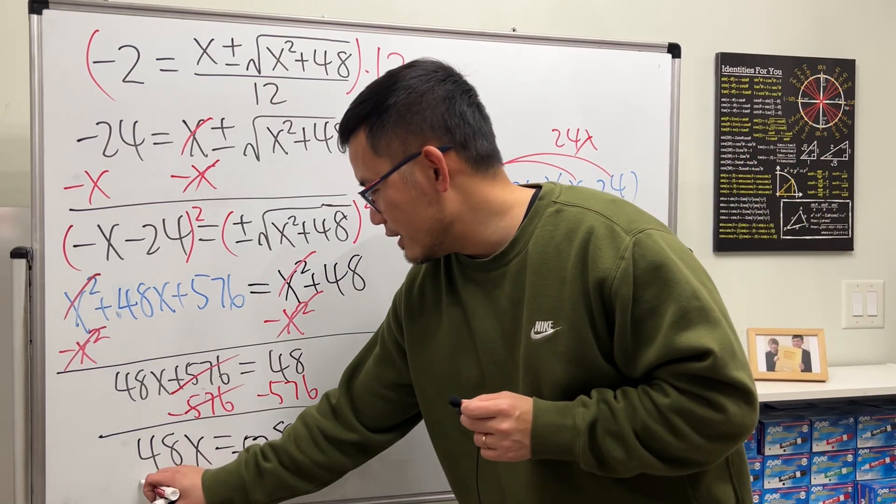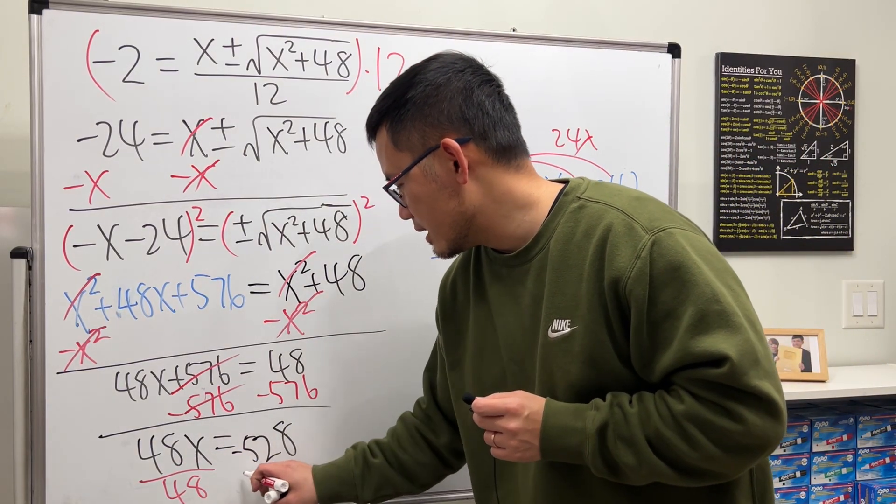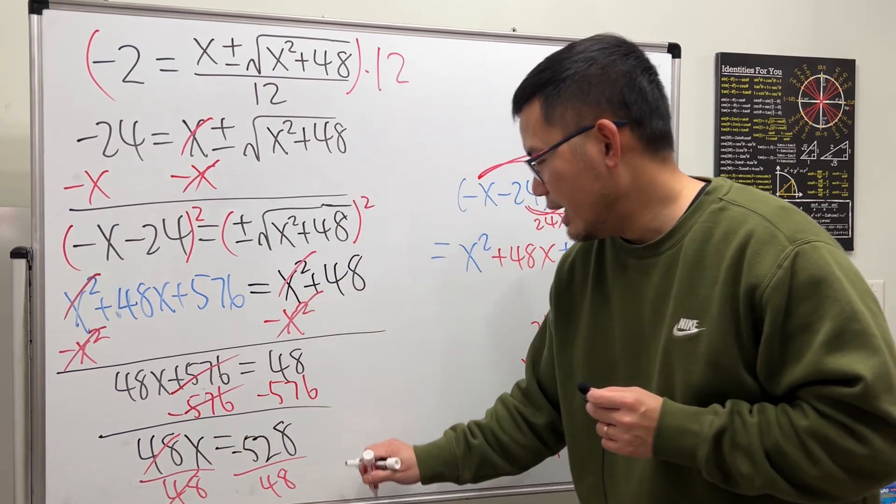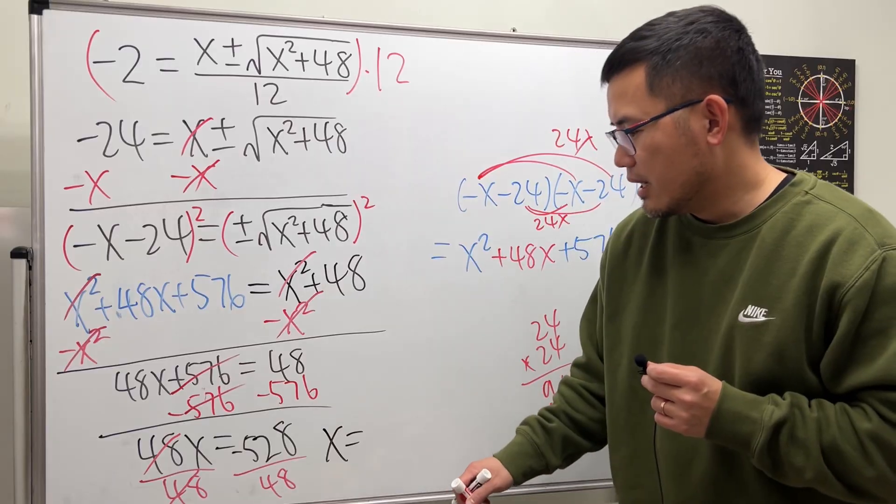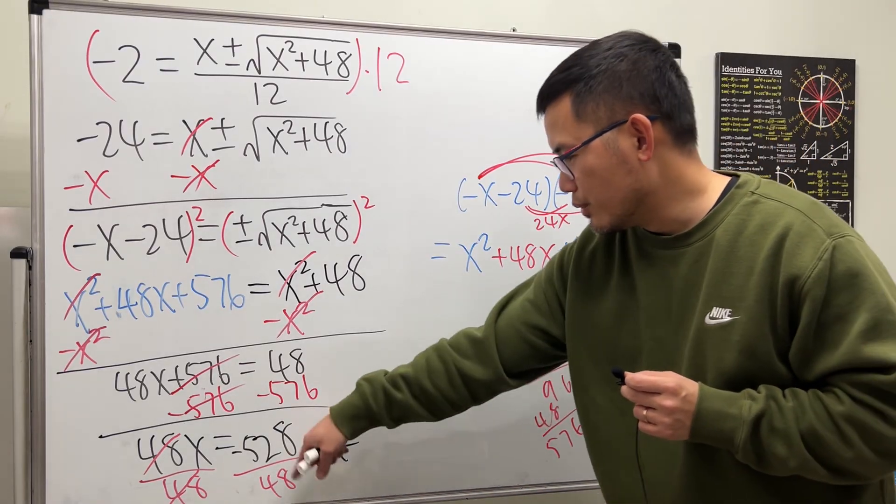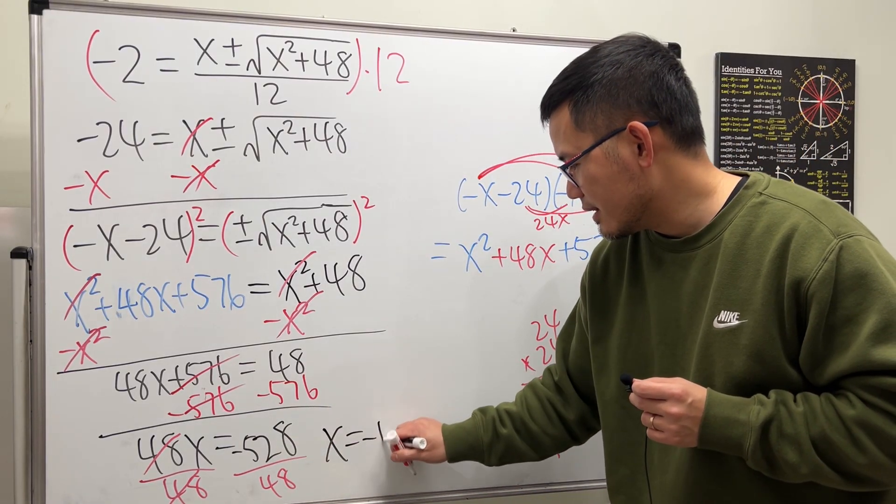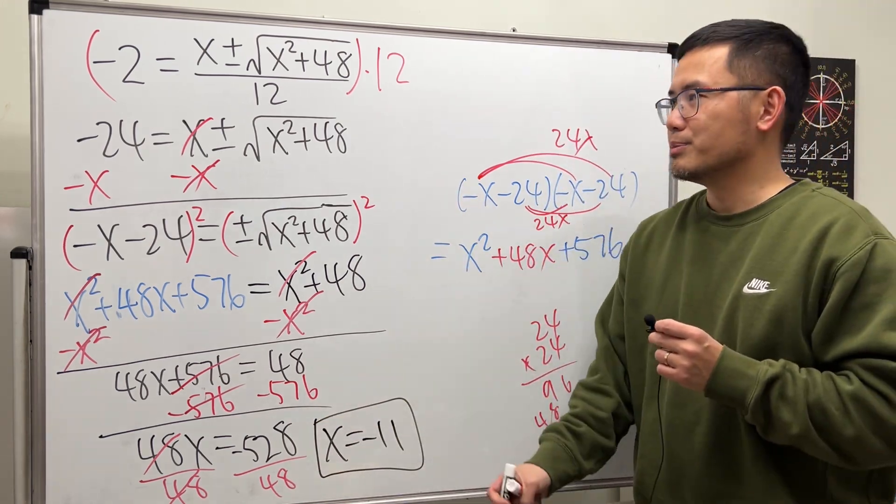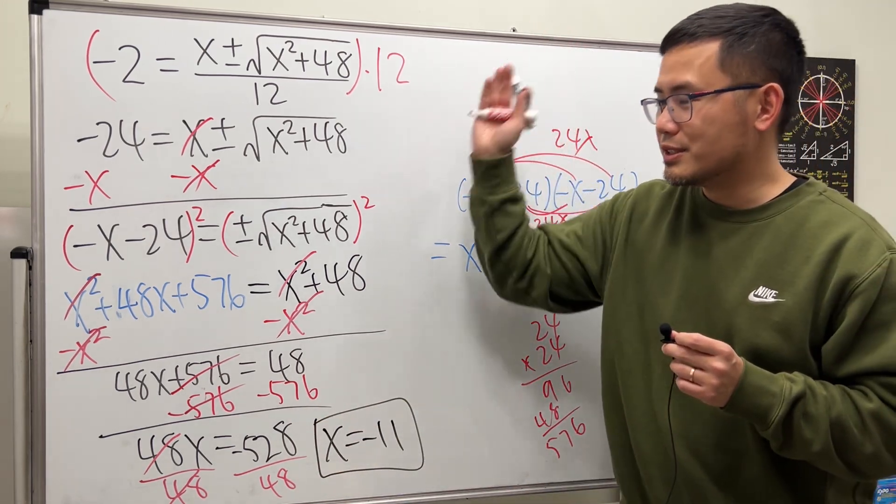All right? And finally, divide both sides by 48. Divide both sides by 48. So they cancel, and we get x, 48, and that should give you negative 11. Done. So, this right here is the solution if you just solve it.